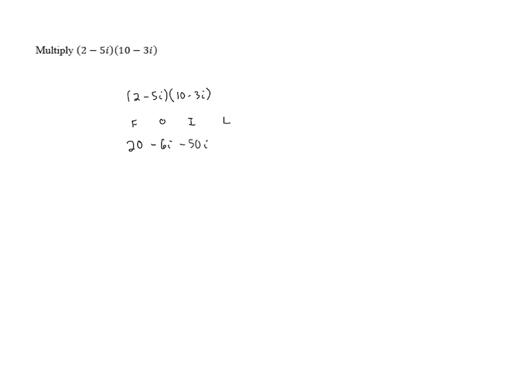And the product of the last terms, negative 5i times negative 3i, ends up giving us positive 15i squared, because the negatives cancel.